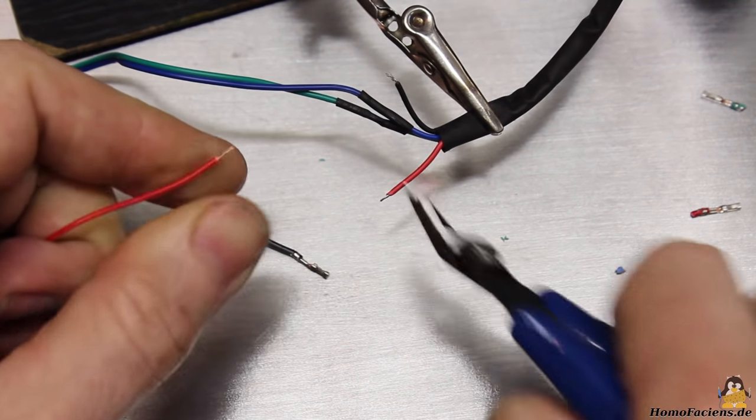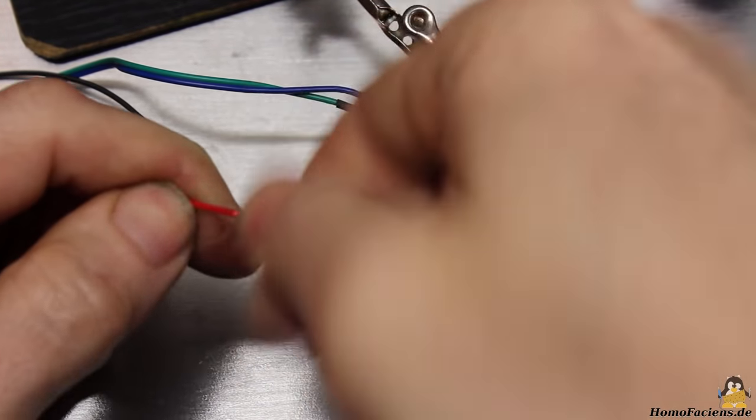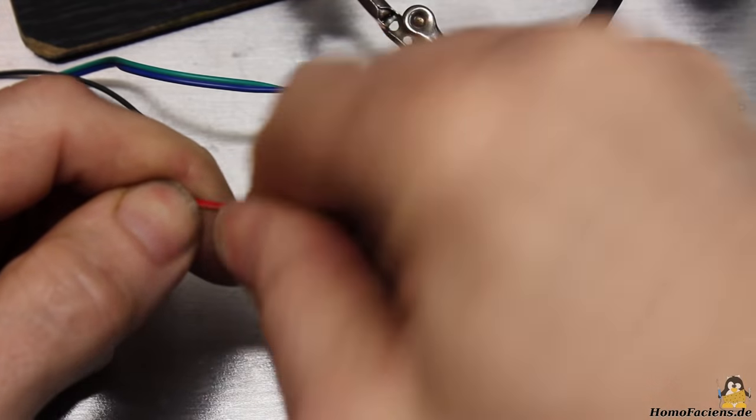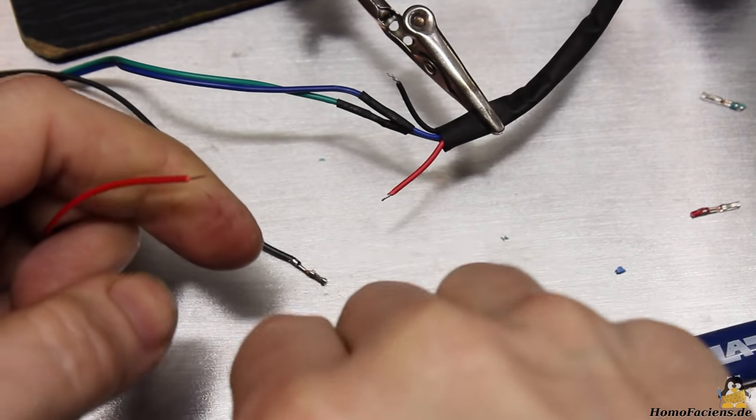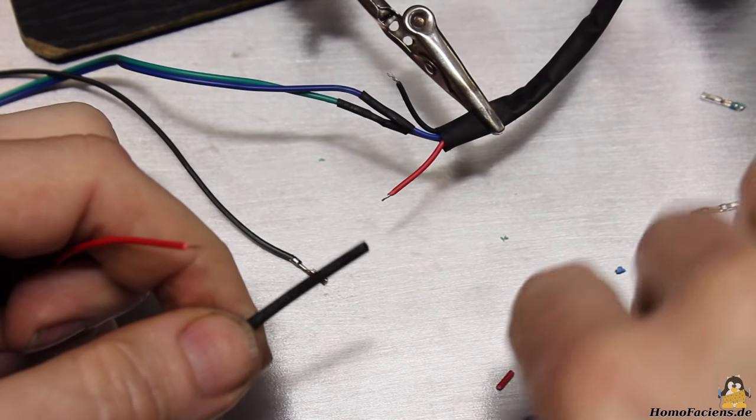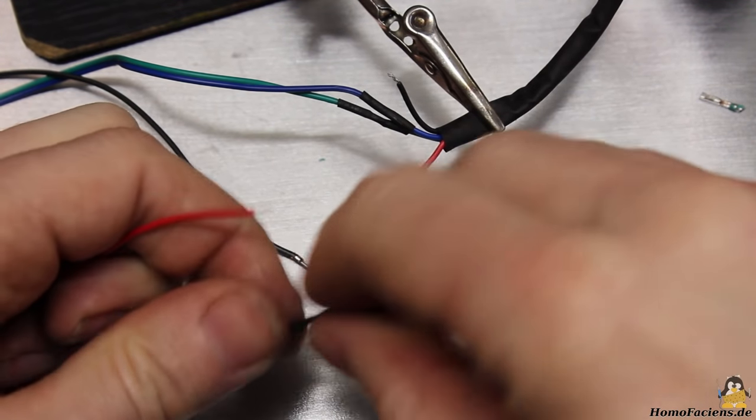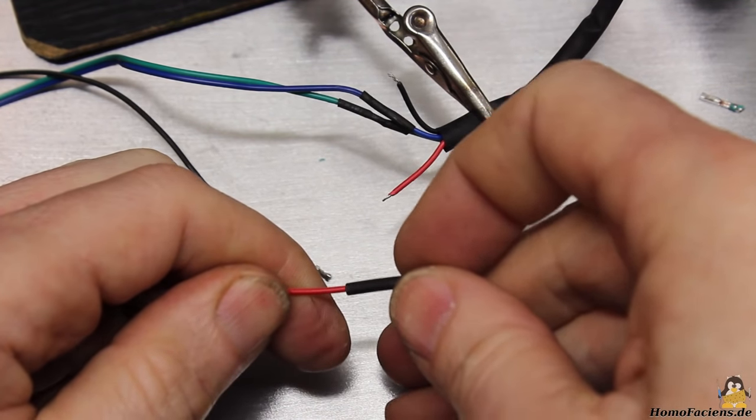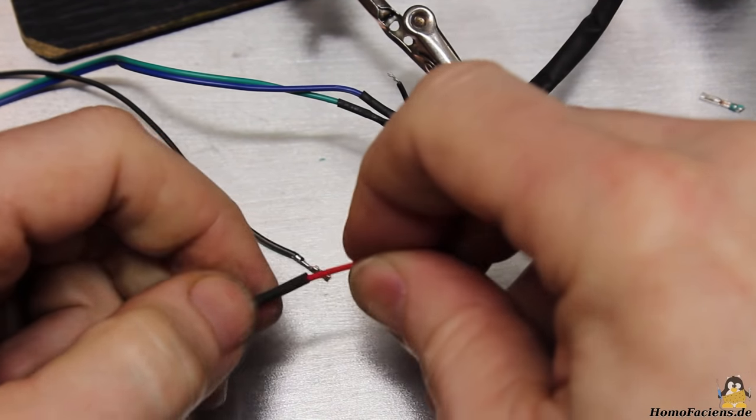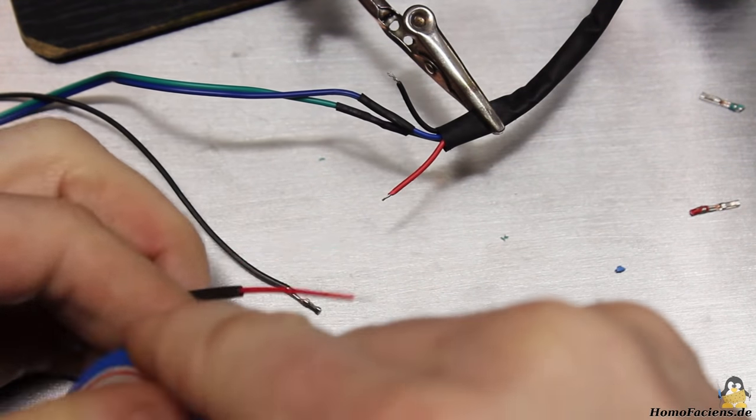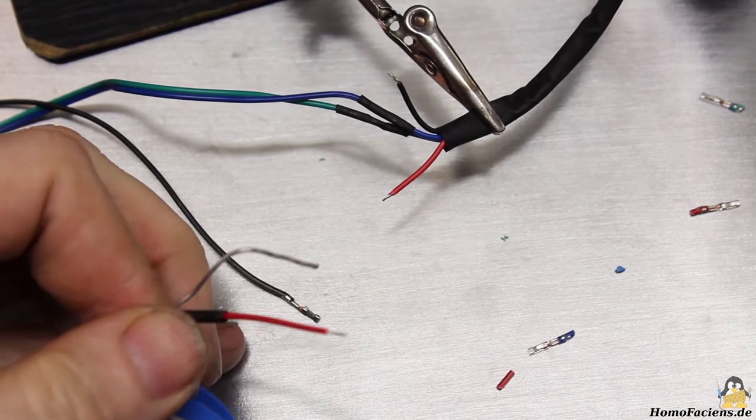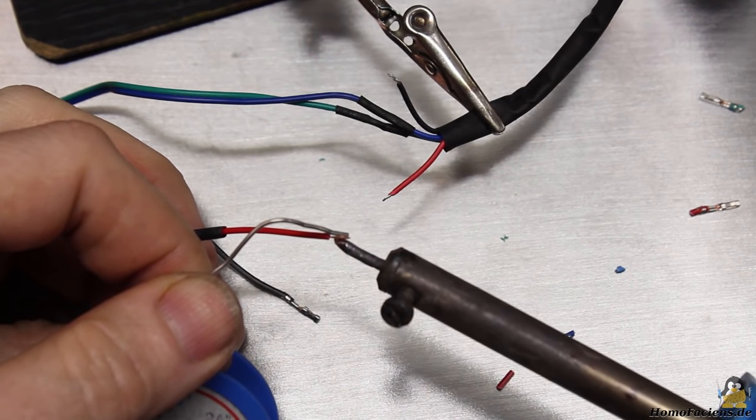A soldering iron as well as heat shrink tubing or insulating tape are needed for the wiring. Here I am soldering the cables of a stepper motor. There is a plug on the other end of the cable that has to be connected to the CNC shield on top of the microcontroller.